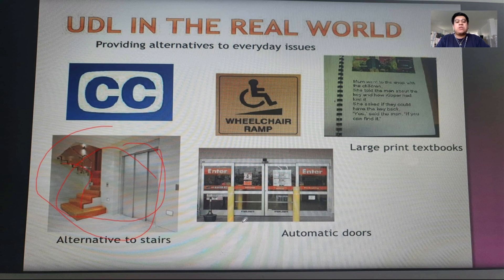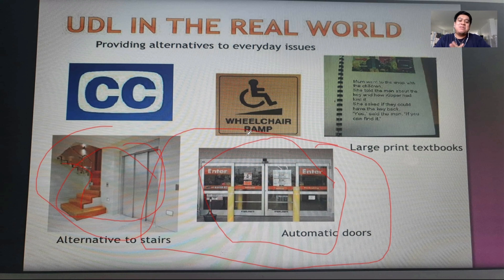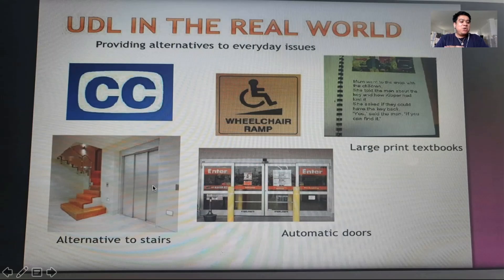Another example is the alternative to stairs — if the elevator isn't working, we still have another option to reach another floor. We also have automatic doors, which open automatically regardless of your age, sex, gender, or size — that door fits all of us. Universal design can be found anywhere: curb cuts on sidewalks make them accessible to wheelchair users and those pushing strollers.